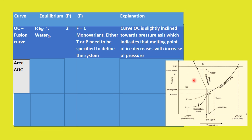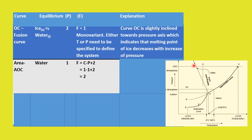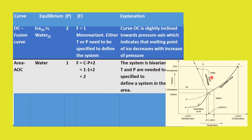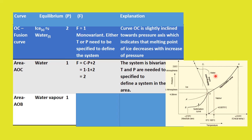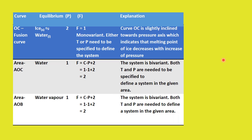Now let us move to the areas. The first area is AOC, where there is only water — one phase. So the degrees of freedom is 2; the system is bivariant, and both temperature and pressure need to be specified to identify the system. In area AOB, only water vapor exists — again one phase, so F = C − P + 2 = 1, giving F = 2. The system is bivariant, and both temperature and pressure are needed to define the system.